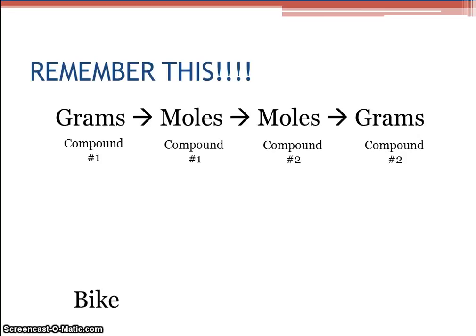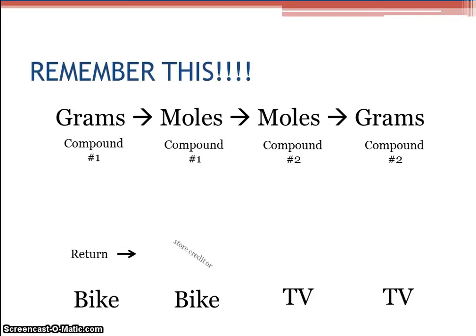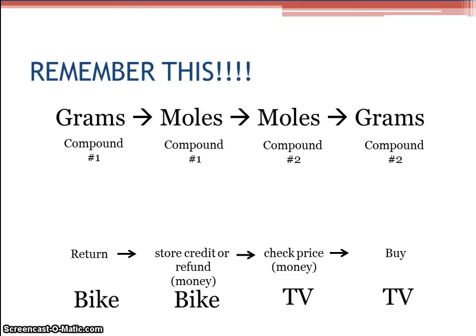Let's use an analogy. We have a bike, which will be compound 1, and a TV, which will be compound 2. We don't like the bike, so we're going to return it to the store for a TV. When we return the bike, we get store credit or a refund — so: money equals moles, moles equals money. Then we find the price of the TV — moles to money, money to moles. Finally, we buy the TV. You can't just take the bike and grab the TV; you have to get the store credit, look up the price of the TV, compare it, and then buy it.